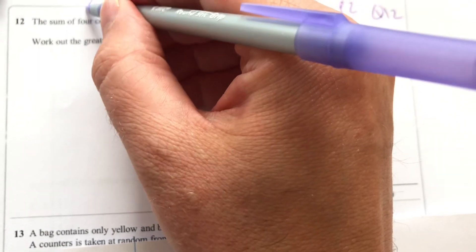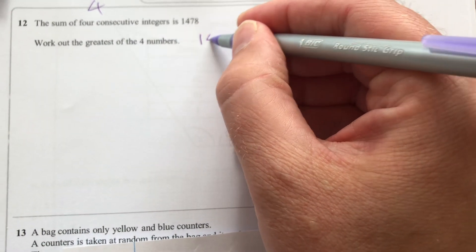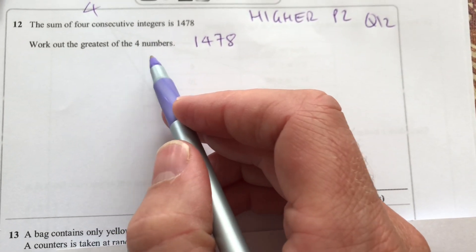It says that the sum of four consecutive integers is 1,478. Work out the greatest of the four numbers.